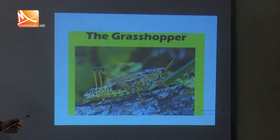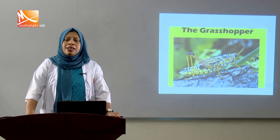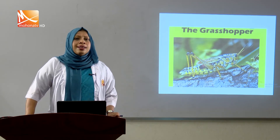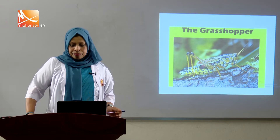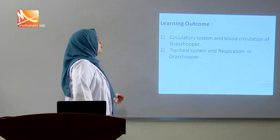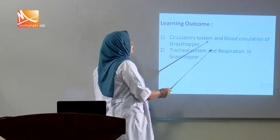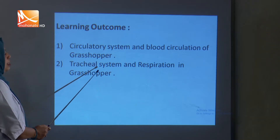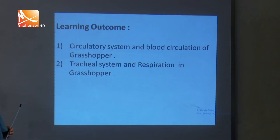They have a digestive system which consists of crop and gizzard. They have a blood circulatory system which is open type, and their respiratory system is the tracheal system. They excrete by Malpighian tubules. After today's lecture, students will know the circulatory system and blood circulation of Grasshopper, and the tracheal system and respiration in Grasshopper.